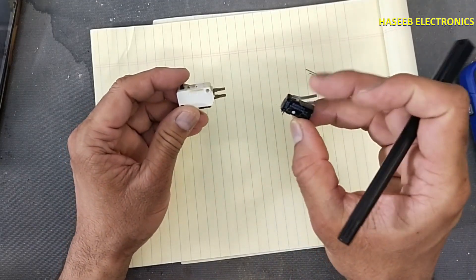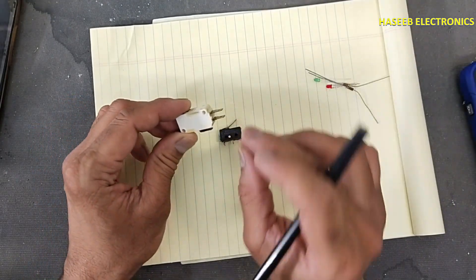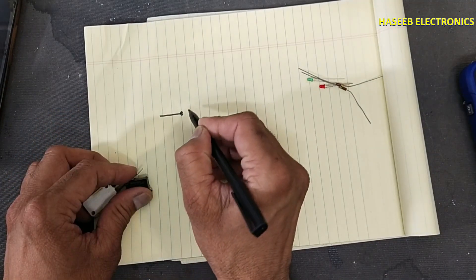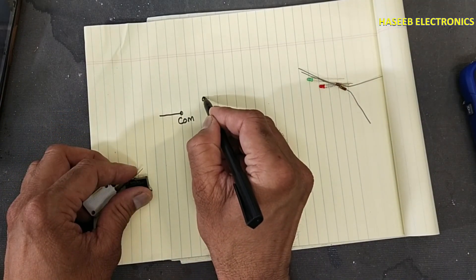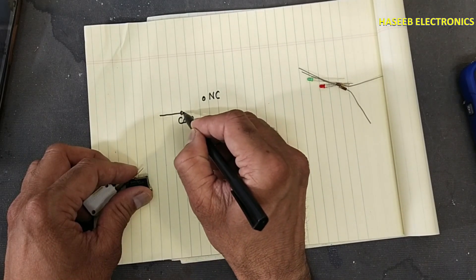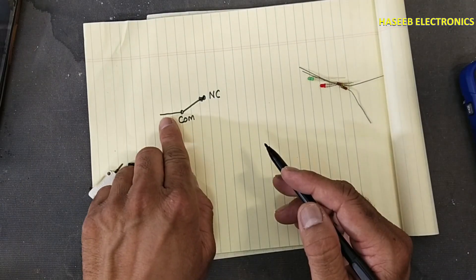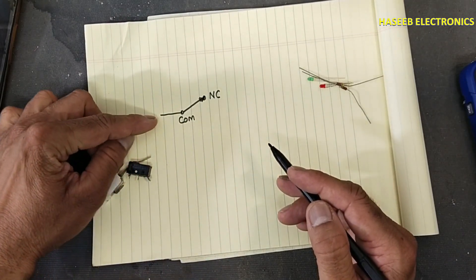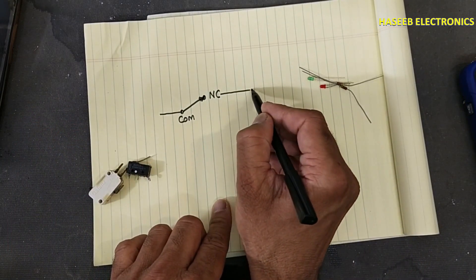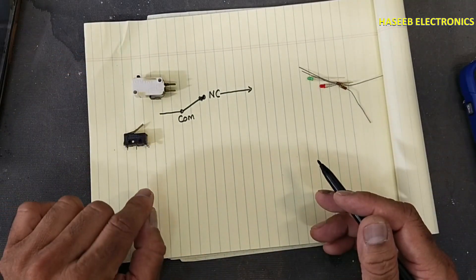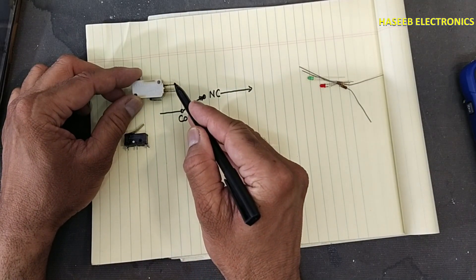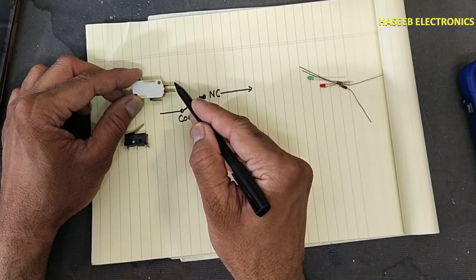When we see this micro switch or limit switch, basically it is a single pole double throw switch. One point is common and one is called NC, normally closed. It is spring loaded. When the supply enters from here it will come out from here. In this condition, common point will make close connection with this point that is called NC.